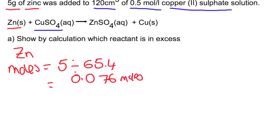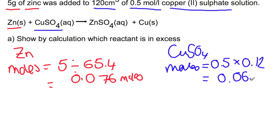If we now have a look at copper sulfate, we are going to do concentration times volume. So concentration of 0.5 multiplied by our volume, which we're going to divide by a thousand. And that gives us 0.06 moles.